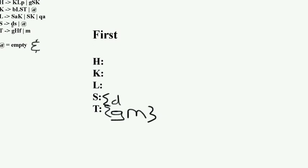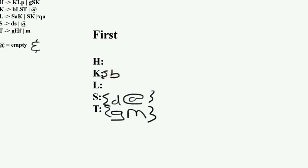S has terminal d or empty, and that's about it — I claim we're done with S. Then we have L, but we're going to skip L and do K first because it seems a little easier. K has b or empty, and I claim that one is complete too.